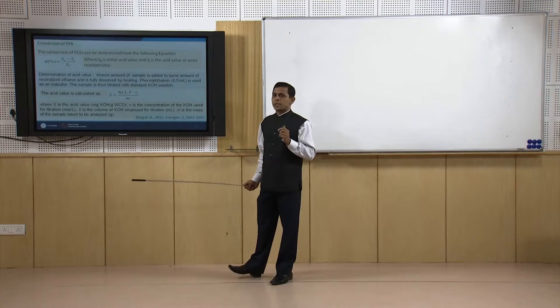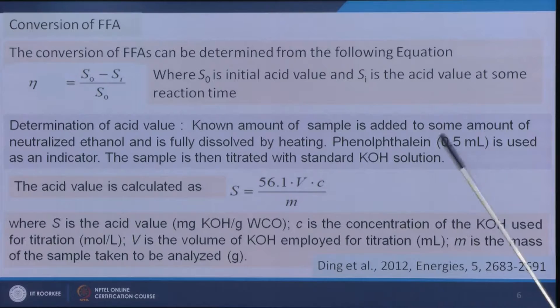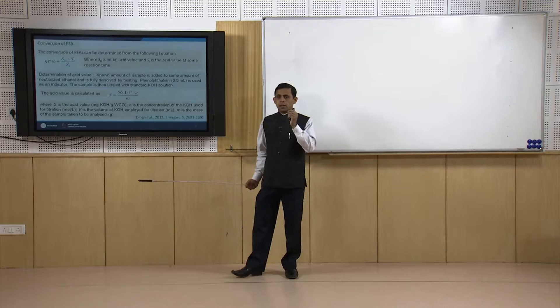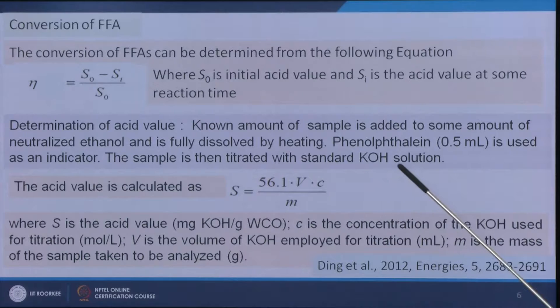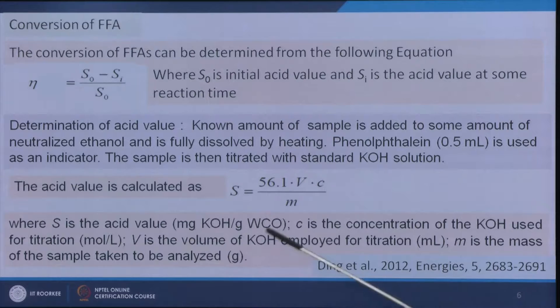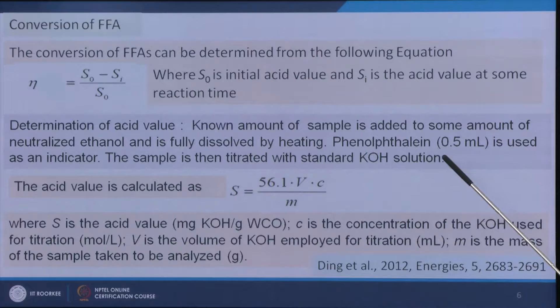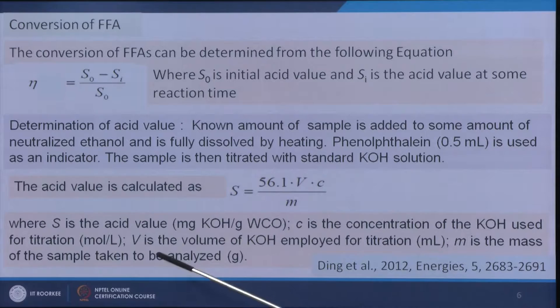To determine the acid value, some amount of oil is mixed with neutralized ethanol, prepared as per the standard protocol. The oil sample with neutralized ethanol is added with a phenolphthalein indicator and titrated against a KOH solution of known concentration — normally N/10. Once the endpoint is achieved, the acid value is calculated as: acid value = (56.1 × V × C) / m, where V is the volume of KOH solution in mL, C is the concentration of KOH in mol/L, and m is the mass of the sample in grams. That way we can get the acid value and the free fatty acid conversion.